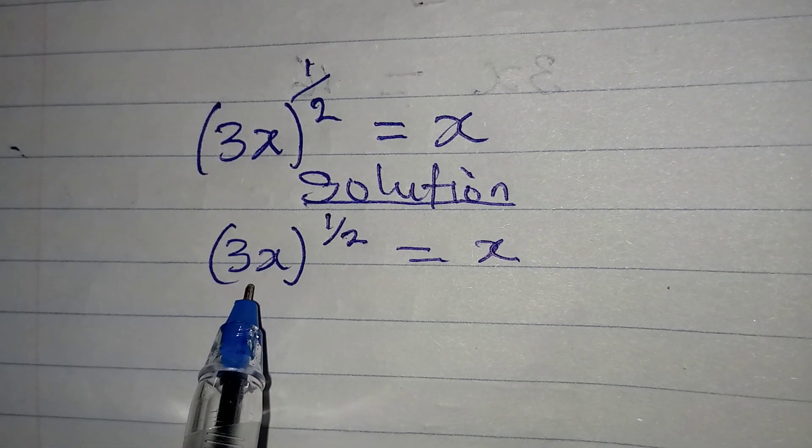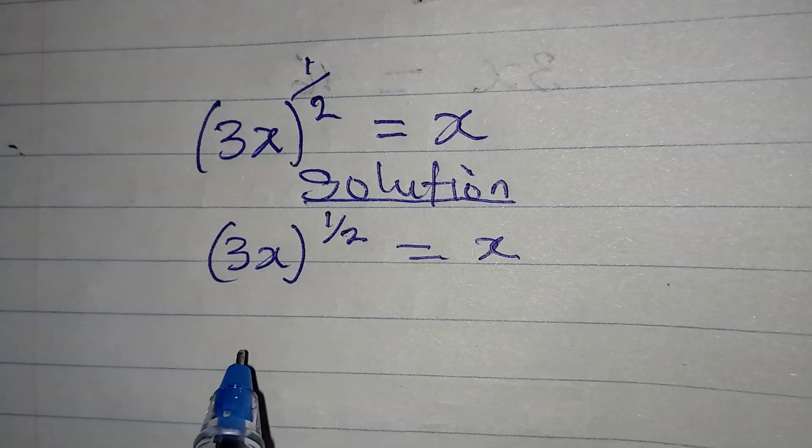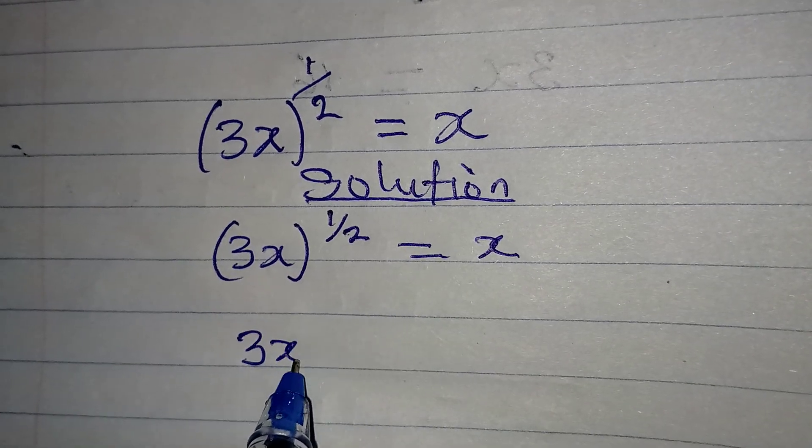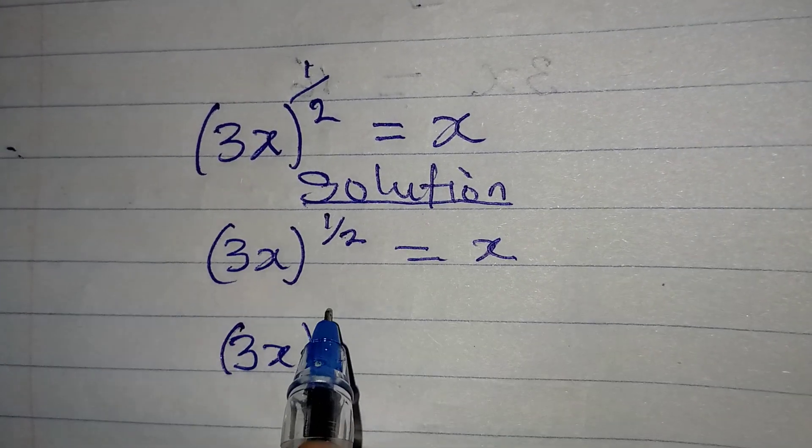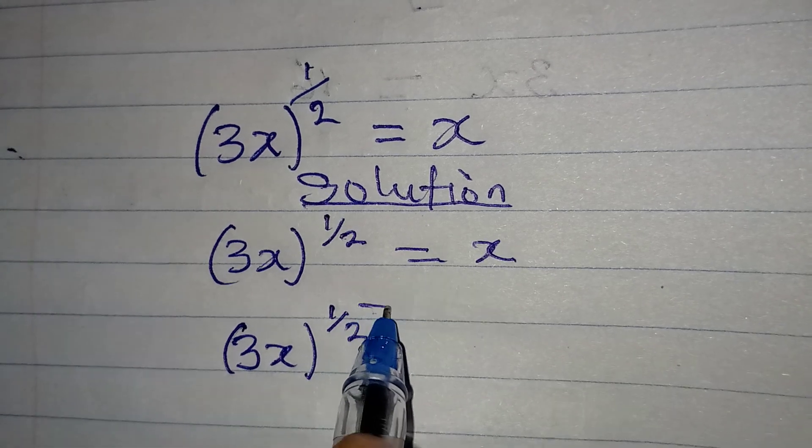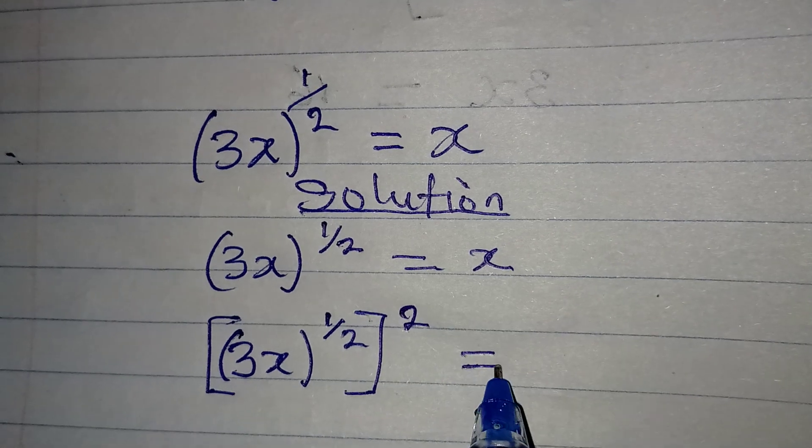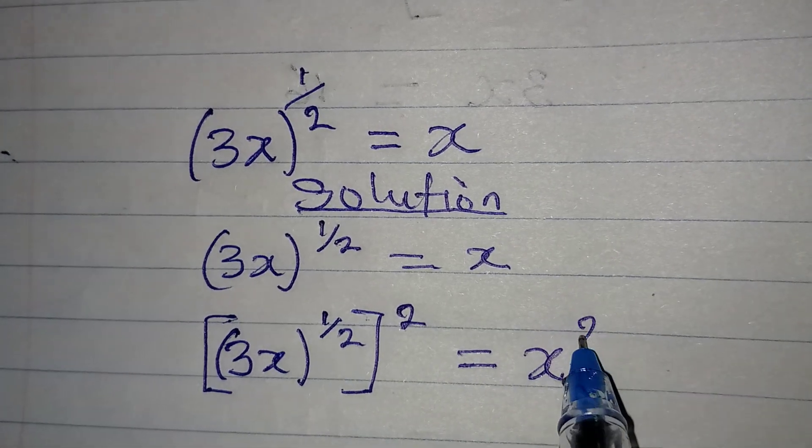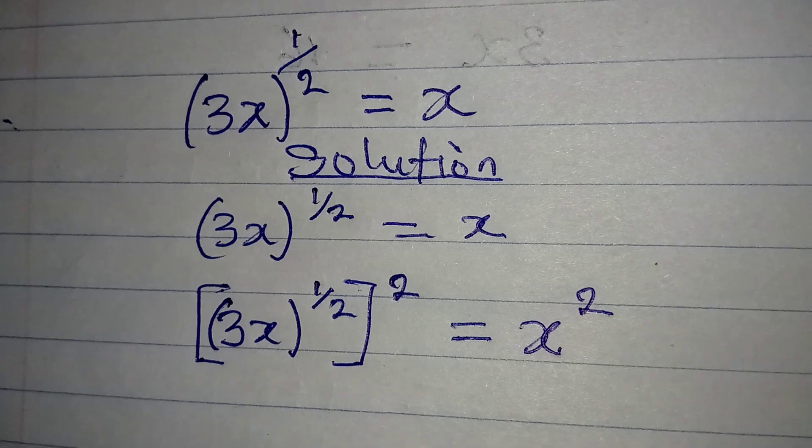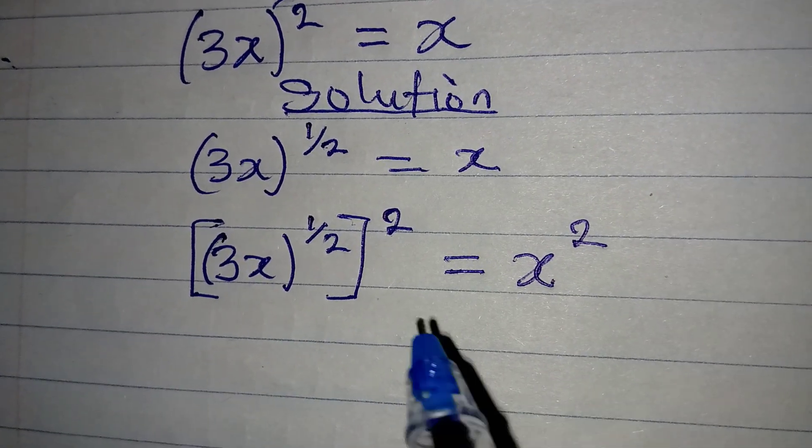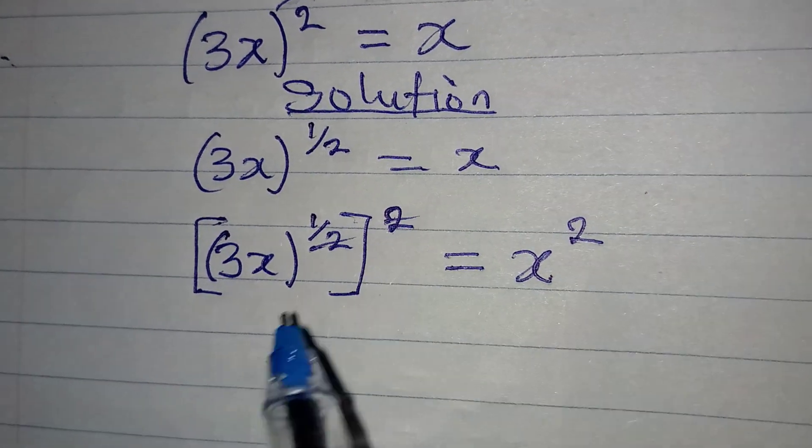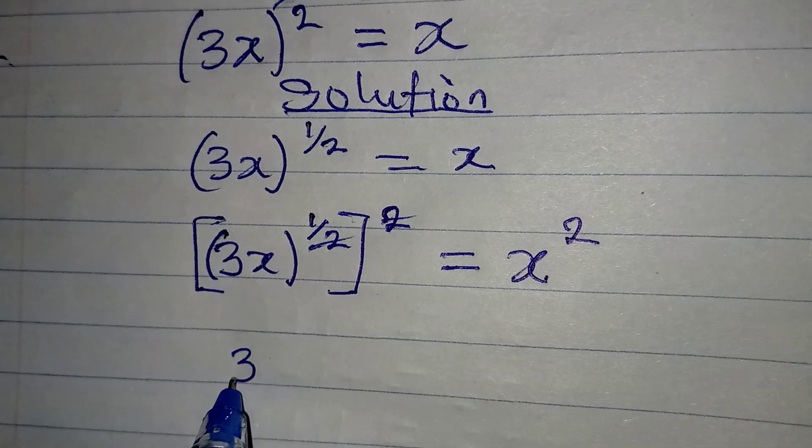Now I will raise this again to the power of 2, and in that case the right hand side will be raised to the power of 2. So that's from here, 2 can cancel itself and we have 3x to the power of 1, which is the same thing as 3x.